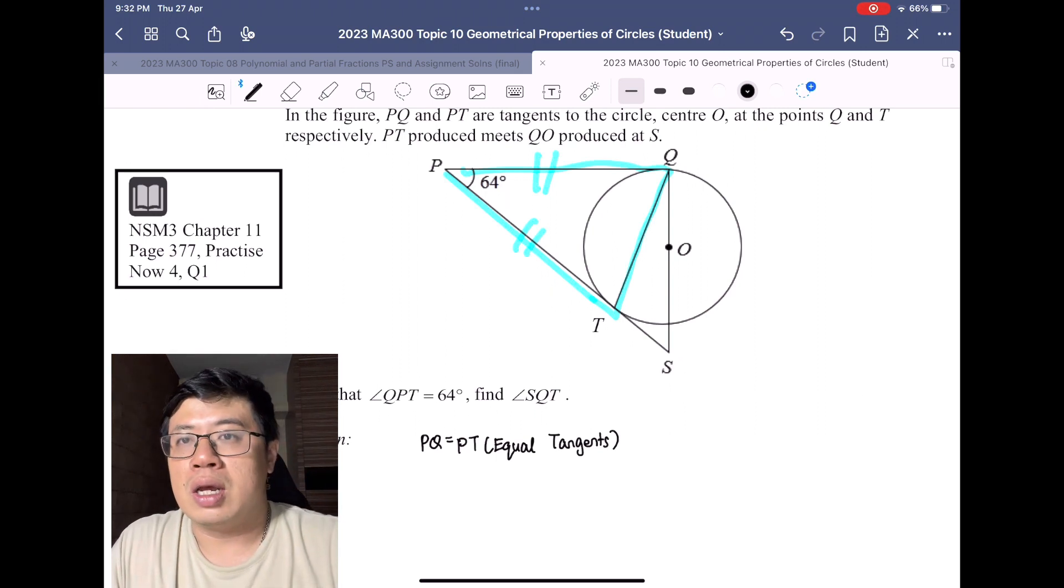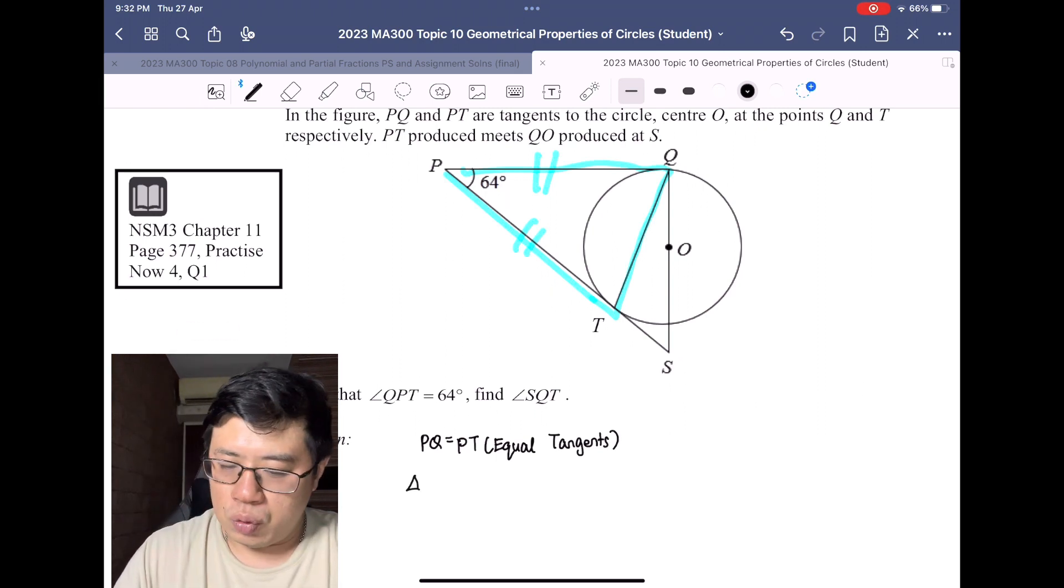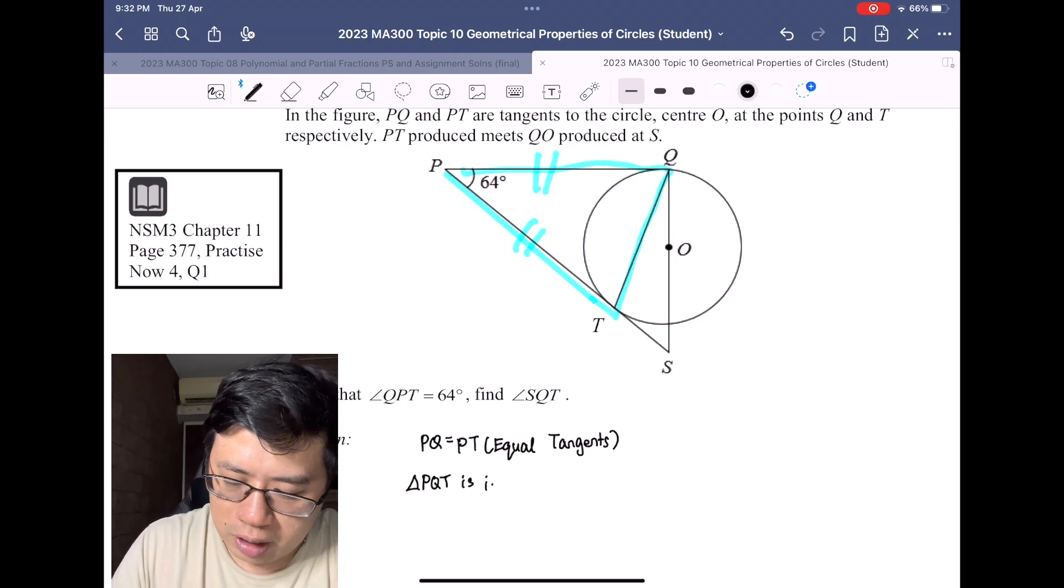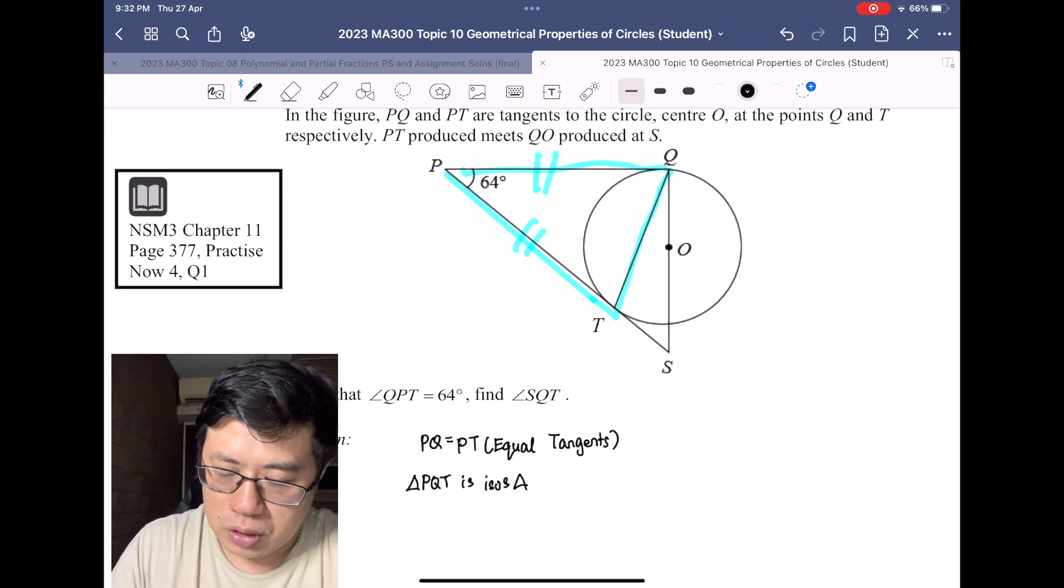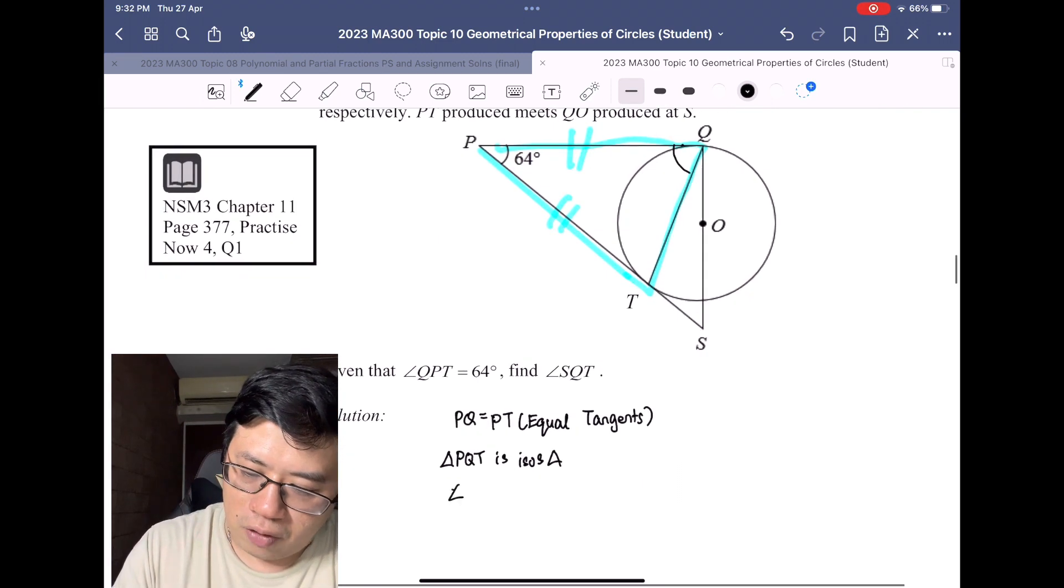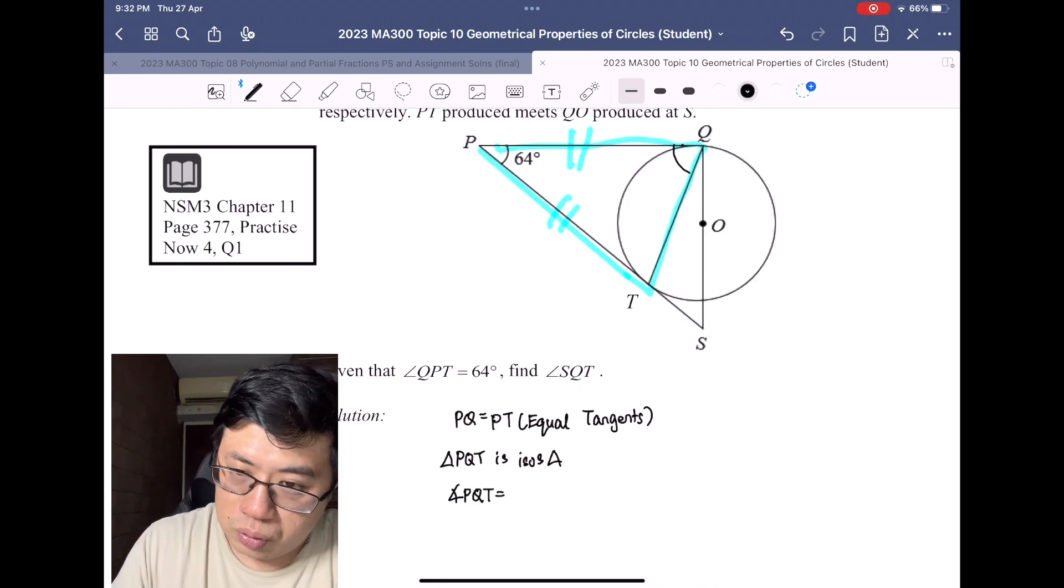After that, you will know that triangle PQT is an isosceles triangle.